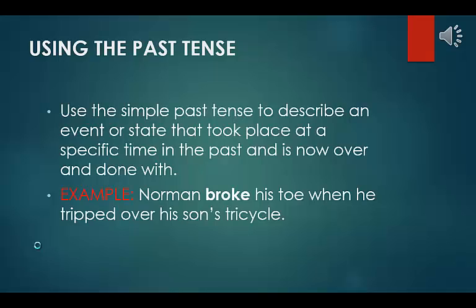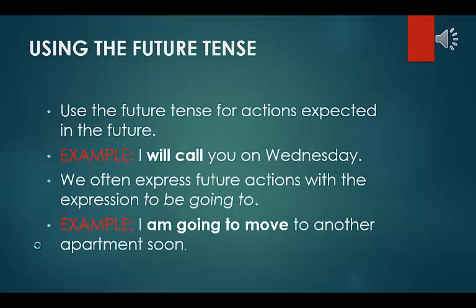Using the past tense. Use the simple past tense to describe an event or state that took place at a specific time in the past and is now over and done with. Example: Norman broke his toe when he tripped over his son's tricycle. Using the future tense. Use the future tense for actions expected in the future. Example: I will call you on Wednesday. We often express future actions with the expression 'to be going to.' Example: I am going to move to another apartment soon.